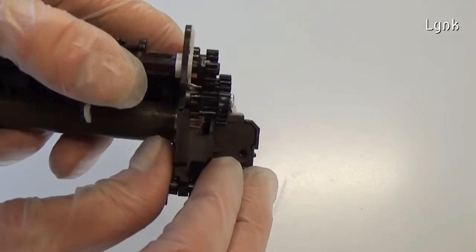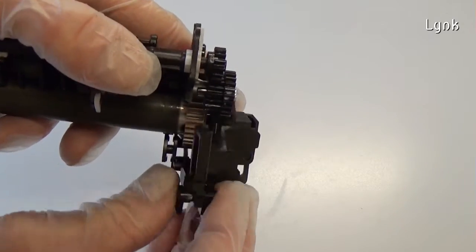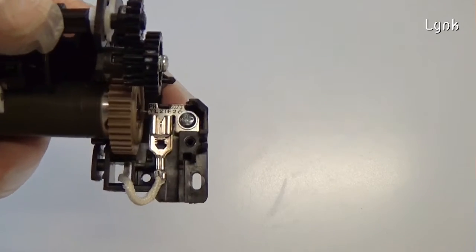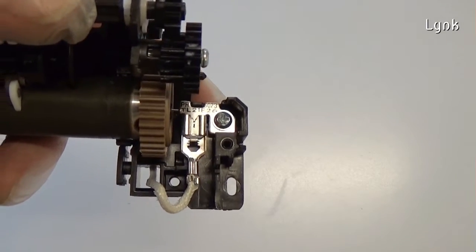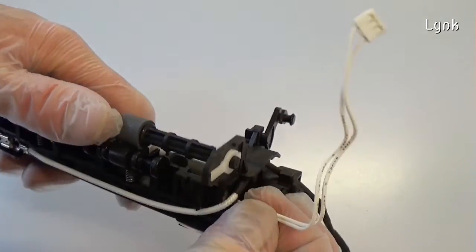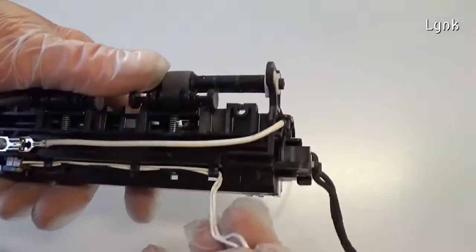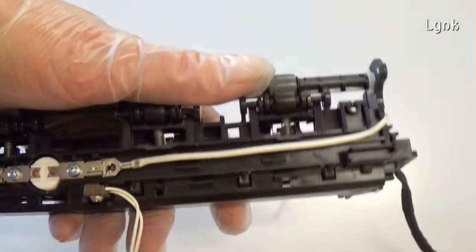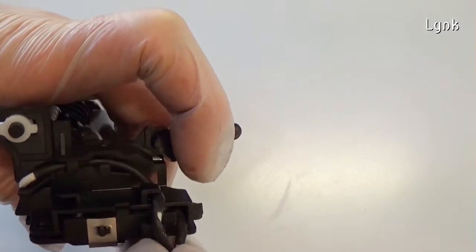Remove the plastic panel. Remove the wires of the thermistor from the slot. Remove the cables of the thermal fuse.